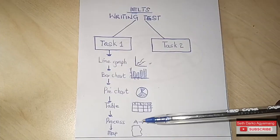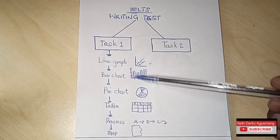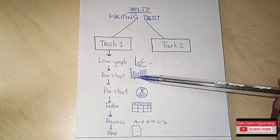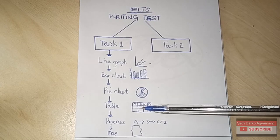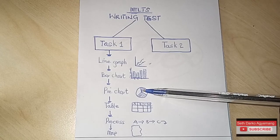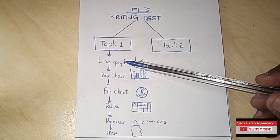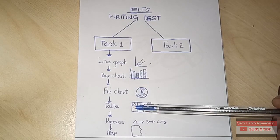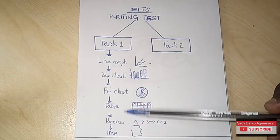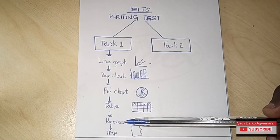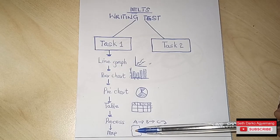There are times you may be given two diagrams to describe in Task 1. For example, you can get a line graph and a pie chart, or two pie charts, or a table and a pie chart. You can also get a line graph and a table. However, I have not seen a combination of processes with another diagram type — usually when you get the processes or the map, you only have that one to describe.